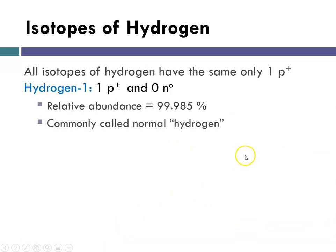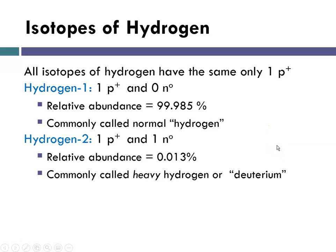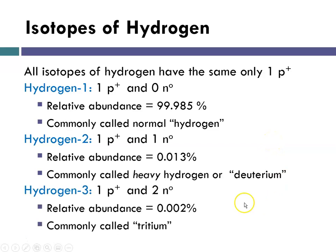Looking at hydrogen: all isotopes of hydrogen have the same number of protons, which is one. Hydrogen-1 has one proton and zero neutrons, and its relative abundance is 99.985%, meaning the vast majority of hydrogen in our universe is hydrogen-1. There are two other isotopes: hydrogen-2 with one neutron, sometimes called deuterium, and hydrogen-3, which has the special name tritium. The relative abundances of these are relatively small.